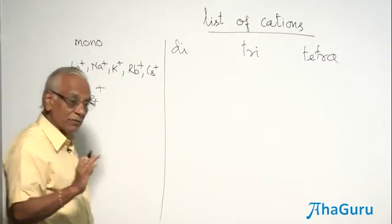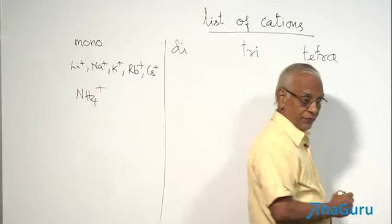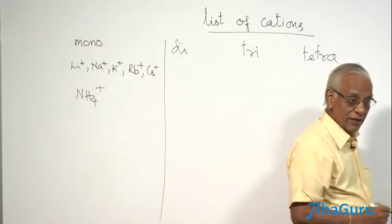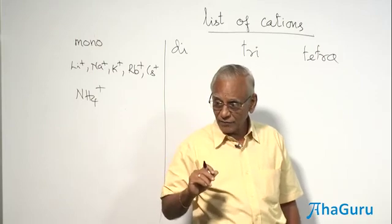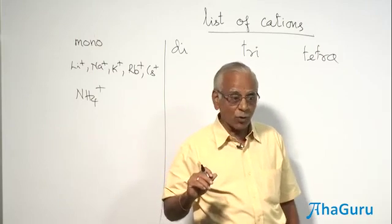Some elements have got more than one valency. What do you call that valency? Variable valency. What is a variable valency? An element exhibiting more than one valency.